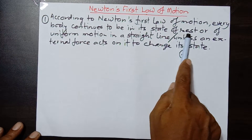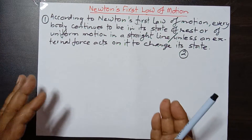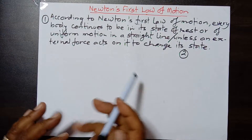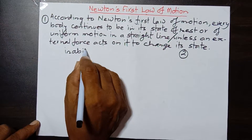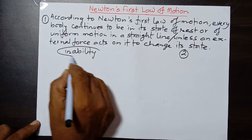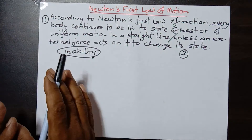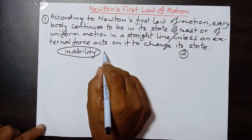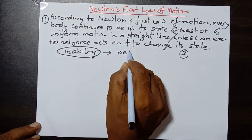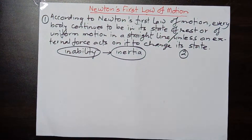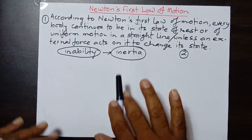Everybody continues to be in a state of rest or of uniform motion in a straight line — what does this mean? It means that bodies have an inability to change their state of rest or motion by themselves. I want to focus on this inability: whether the body is at rest or in motion, it has an inability to change its state by itself. Such an inability is called inertia.